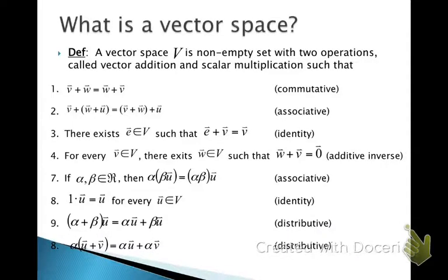A vector space V — V is just a generic term for any vector space — is non-empty. Non-empty simply means there's something in it, even if it just contains a zero vector. And there are two operations: vector addition and scalar multiplication. The vector space must have the following properties.